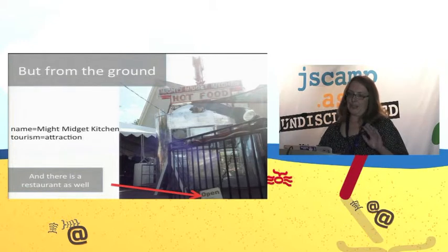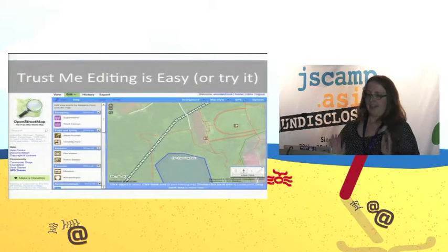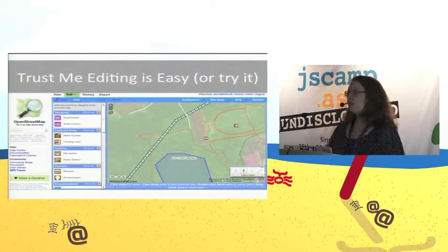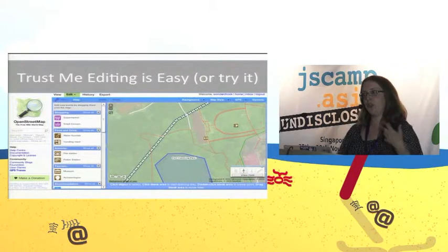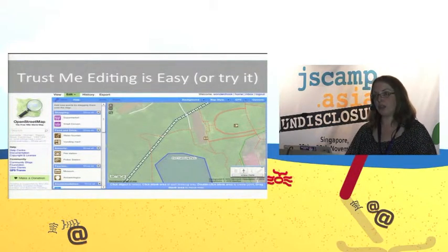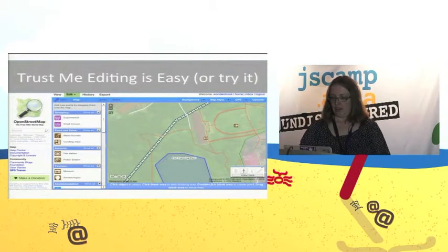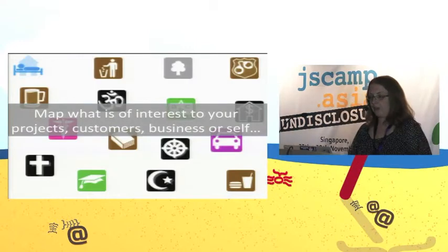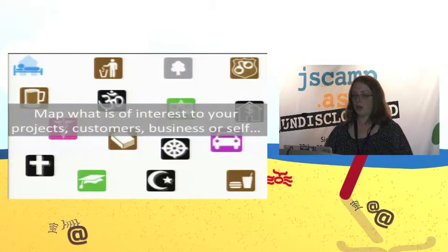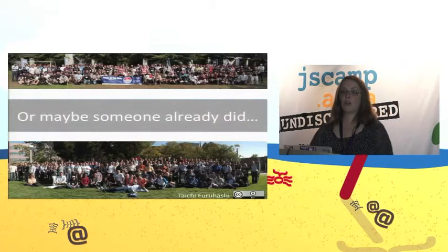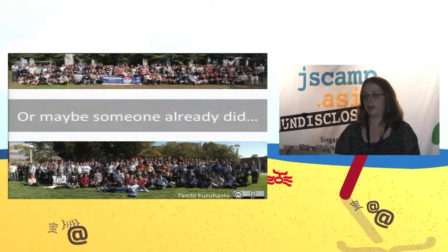So that's a basic breakdown of the OpenStreetMap data model. Editing is relatively easy, but you're probably here because you want to use the information and make maps for your website. The editing thing is still important though — you can map what's of interest to your projects, your customers, your business, yourself. Or maybe someone's already done it, and you can just consume that information.